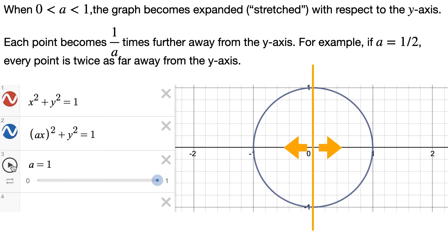When a is between 0 and 1, the graph becomes expanded or stretched with respect to the y-axis. Every point becomes 1/a times further away from the y-axis. Here's the animation. As a gets smaller and smaller, it actually gets further and further apart. It's the reciprocal of a that determines how much further apart it is. For example, if a equals 1/2, every point becomes twice as far away from the y-axis.